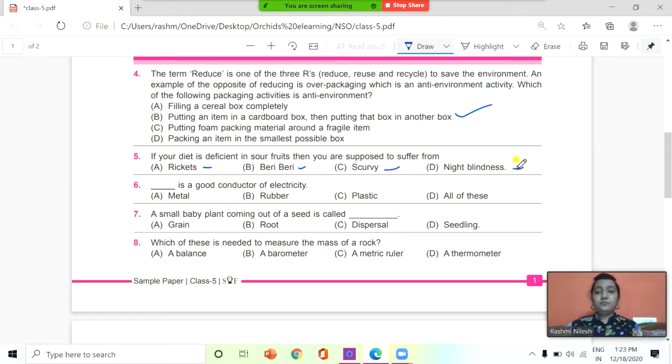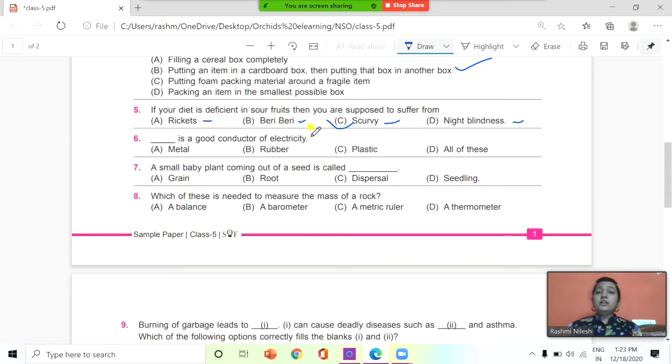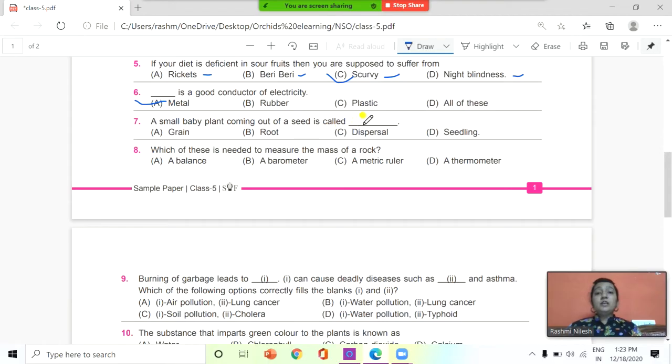Next: dash is a good conductor of electricity. Metal, rubber, plastic, or all of this? Which is a good conductor of electricity? It is A, metal. Next, a small baby plant coming out of a seed is called dash: grain, root, dispersal, or seedling? What do we call it? It is called as seedling, so D is the answer. Number eight: which of these is needed to measure the mass of a rock? A balance, a barometer, a metric ruler, and a thermometer. Which is required to measure the mass of a rock? It is a balance.